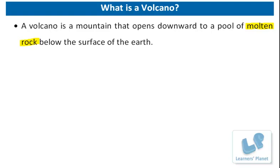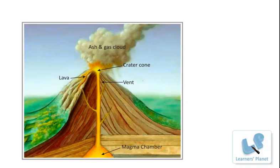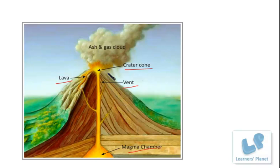I would like to present it with the help of a picture. Here is a very simple picture which shows how it occurs. This is a magma chamber below the surface of the earth. This is a vent from which it oozes out. This is the lava. This is the crater zone where the lava spreads and the volcano is occurring. And this is the ash and gas cloud.